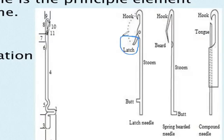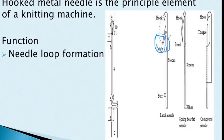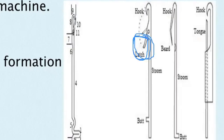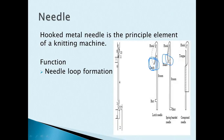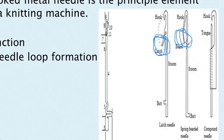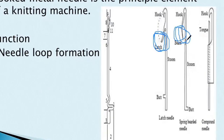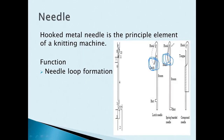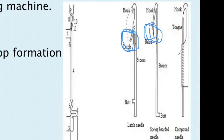The needle is an important machine part. The first is known as the latch needle. The second one is the bearded needle — it has a beard. The third one is the compound needle, also known as the slide or elongated needle.